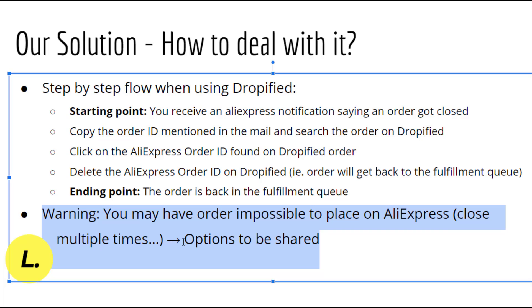That only works if you know your supplier. Another option: if you do dropshipping, the same product can usually be found elsewhere on AliExpress, so you simply order from a different supplier for that client. Another trick: change the name or surname slightly — for example, 'Maria Santa Monica' becomes 'Maria Santa Monica M' — changing the display without making the address incorrect, which can help avoid the order closing again.